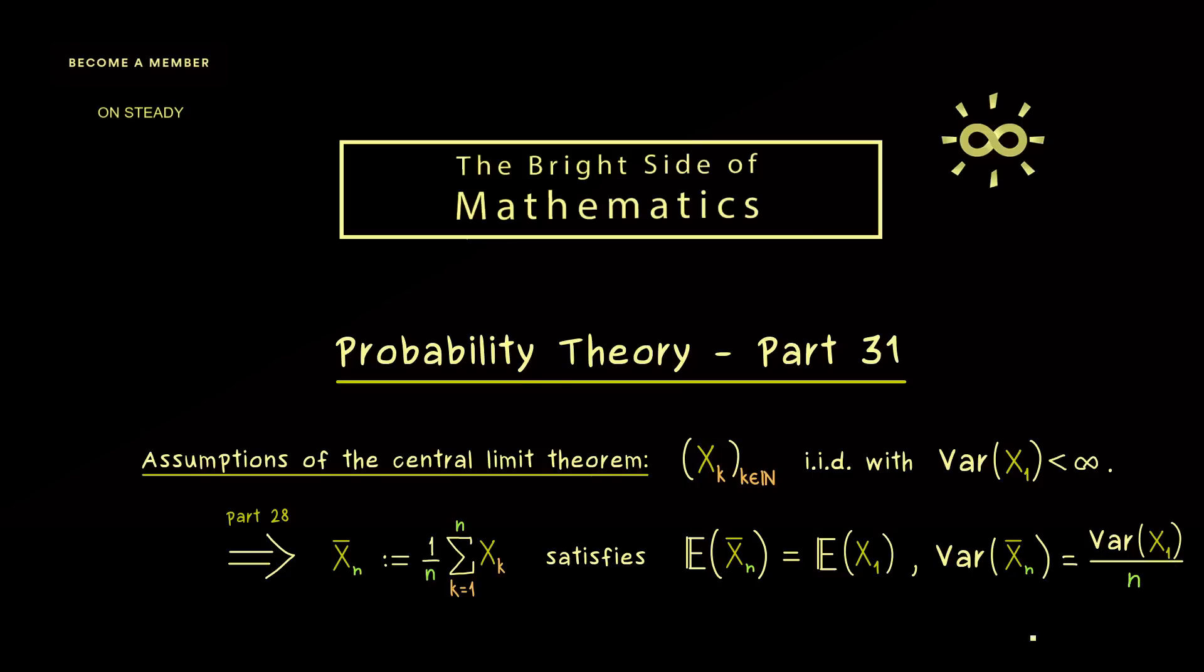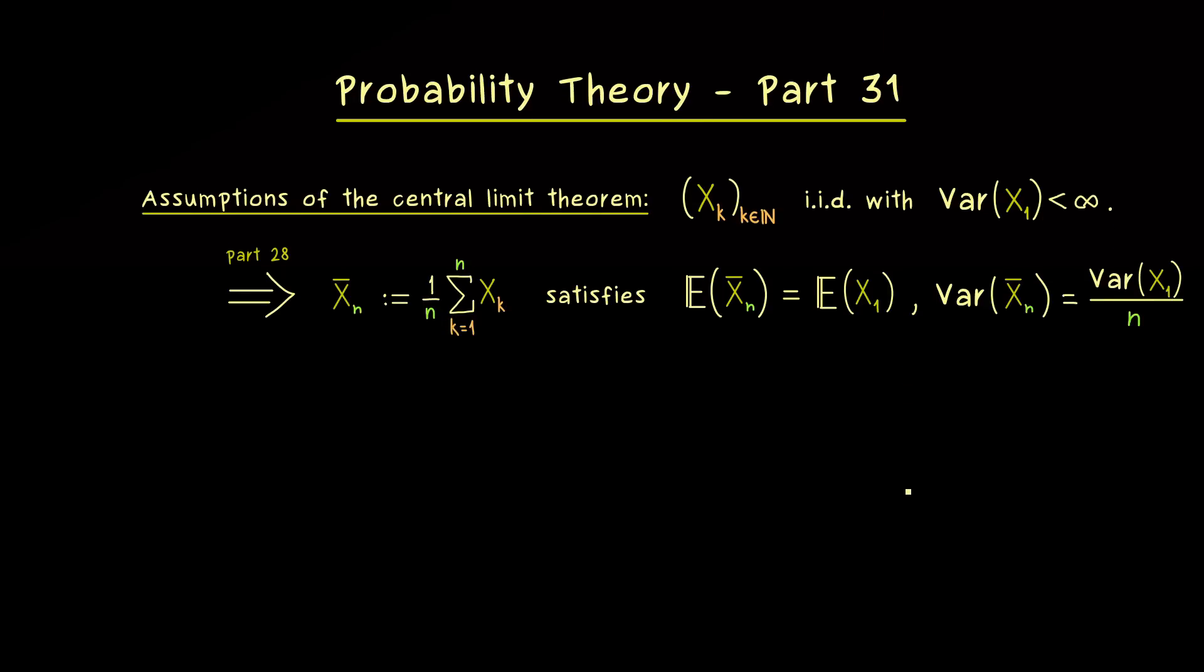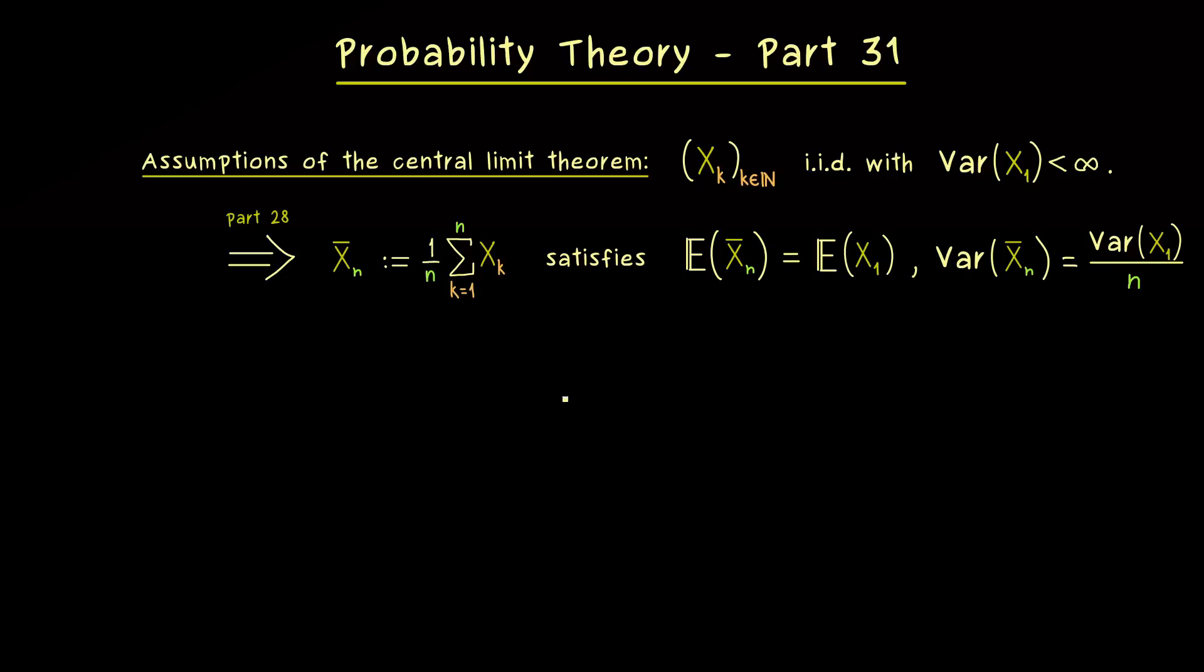So this means, the larger our number n is, the smaller our fluctuations around the mean are. There please recall that we have already discussed that in the videos about the law of large numbers. And now in this video today, we will see that under these assumptions, we have even a stronger result.